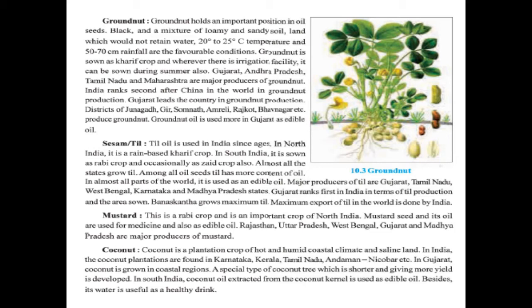Next is coconut. Coconut is a plantation crop of hot and humid coastal climate and saline land. In India, coconut plantations are found in Karnataka, Kerala, Tamil Nadu, Andaman, and Nicobar. In Gujarat, coconut is grown in the coastal region and a special type of shorter coconut tree giving more yield has been developed. In South India, coconut oil extracted from coconut kernel is used as edible oil, and its water is useful as a healthy drink.